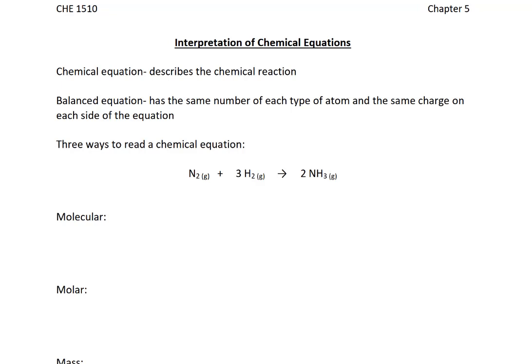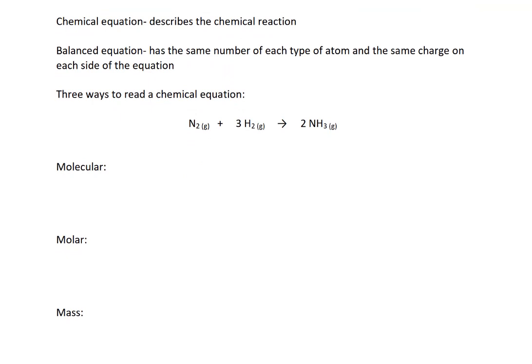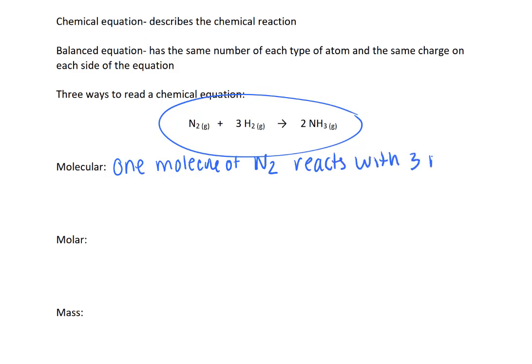So we need to start off with a balanced chemical equation, and when we look at a balanced chemical equation there's actually three ways to interpret this. One of the ways is to interpret as if we were talking about just singular molecules. If we're talking about a molecular equation, then this one right here would read as one molecule of N2 reacts with three molecules of H2 to form two molecules of ammonia. So that would be how we would interpret this equation if we were on the molecular level.